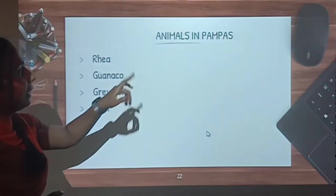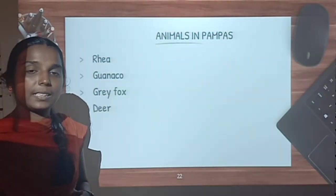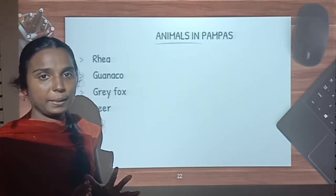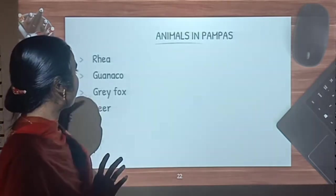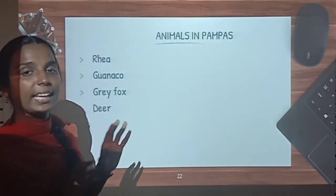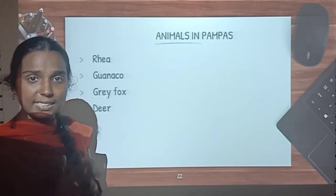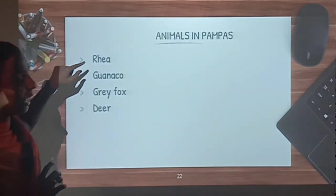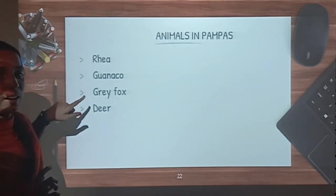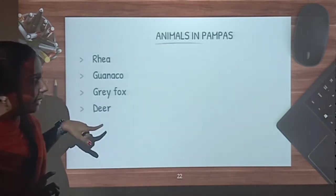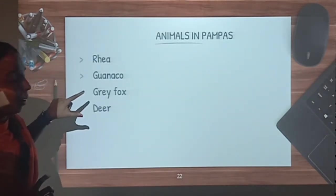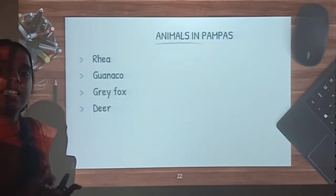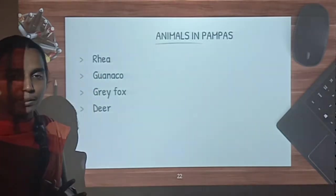Now let us see the animals in pampas. Pampas are the grasslands located in South America. In the pampas of South America we can see animals such as rhea, guanaco, grey fox and deer. Among these, rhea is the largest bird in South America.